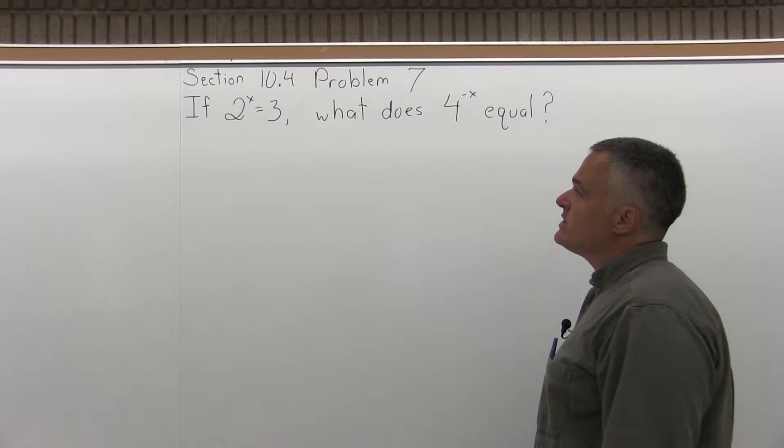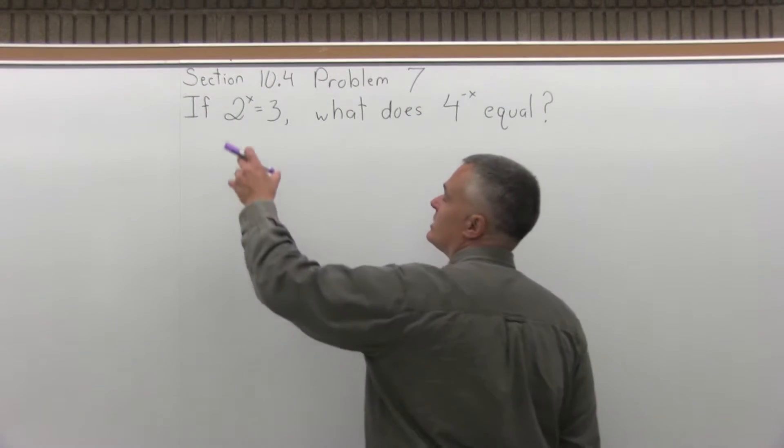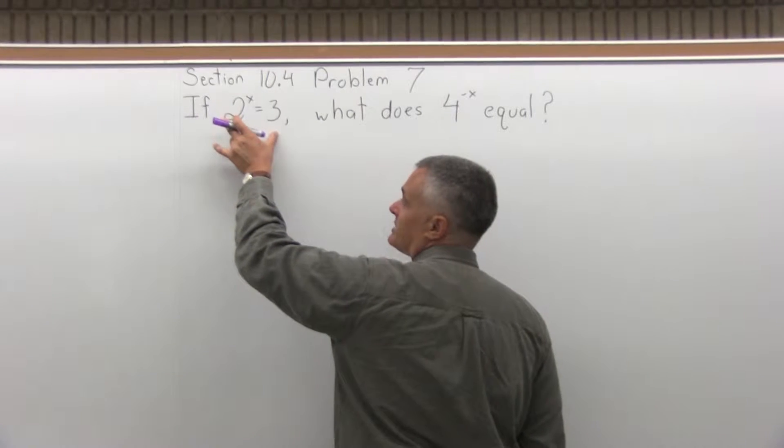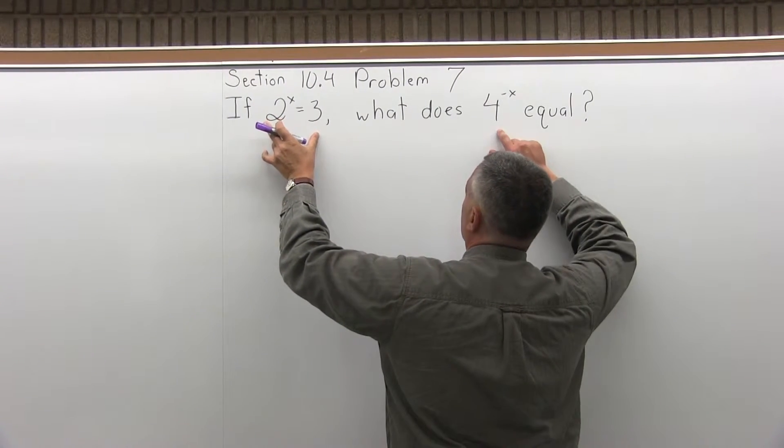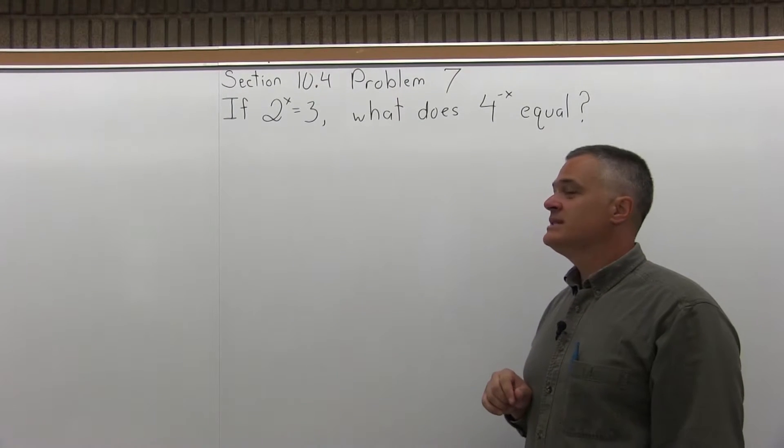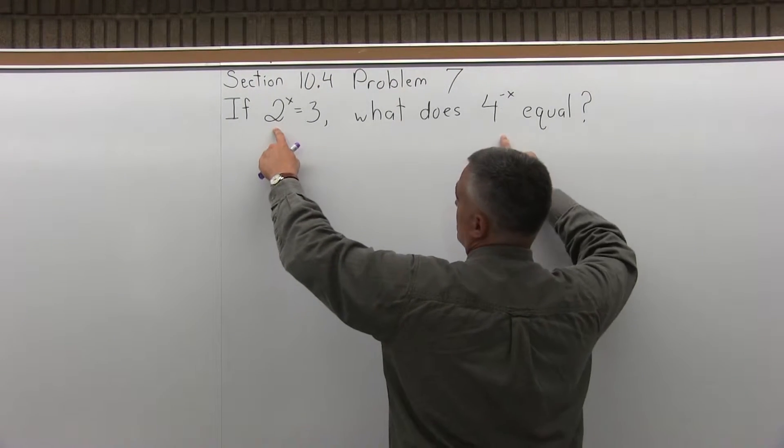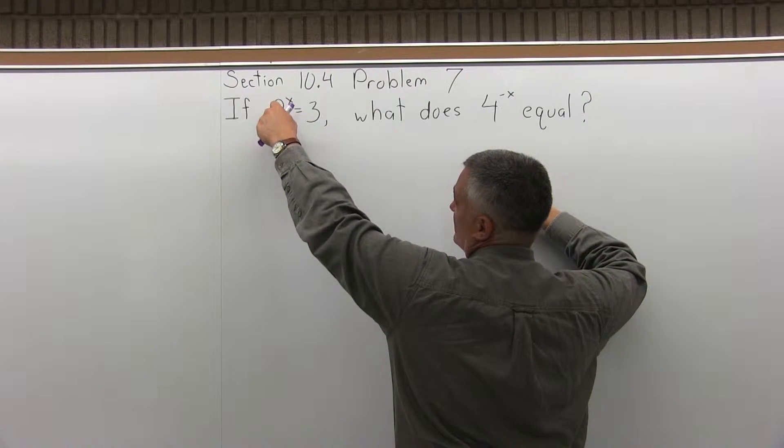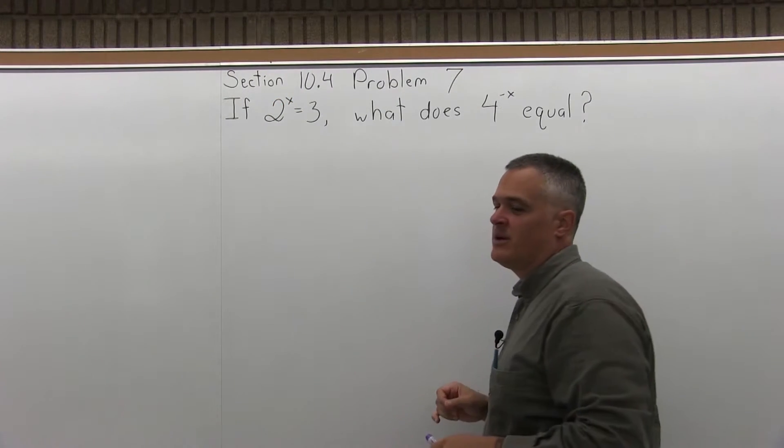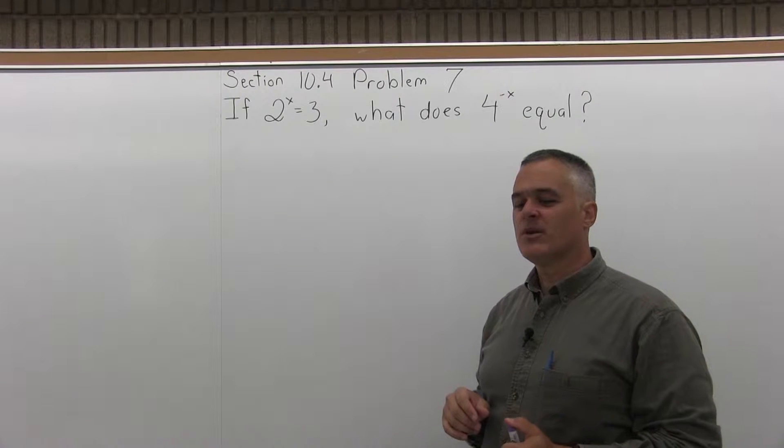My first thought would be to take the equation and do whatever I need to do on both sides to make it look like 4 to the negative x, but it doesn't work out quite as easily as you'd think. You might think, well, square the 2, but if you do both sides to the second power, it's really 2 to the 2x. You kind of hit a dead end if you start with that.